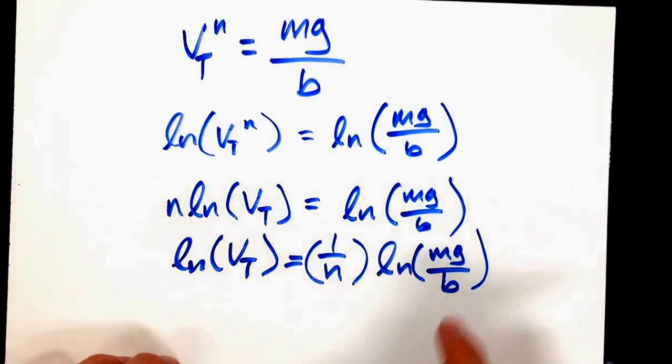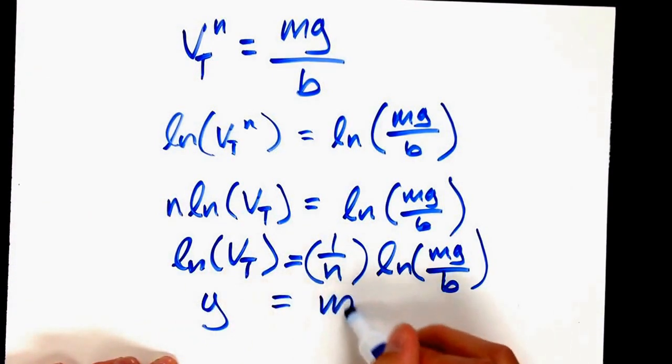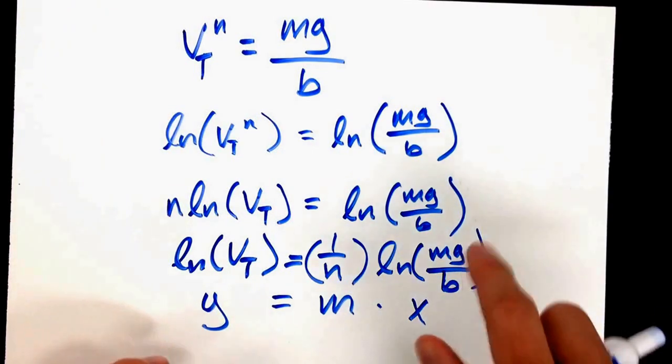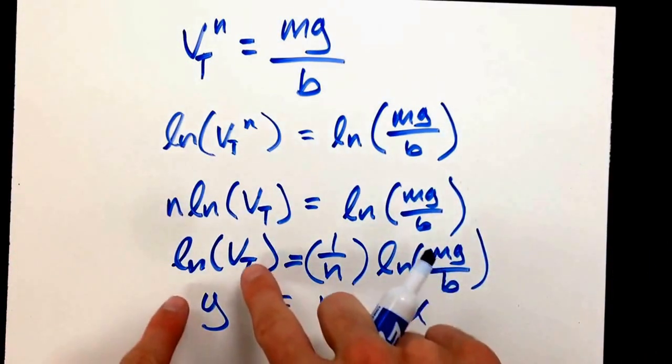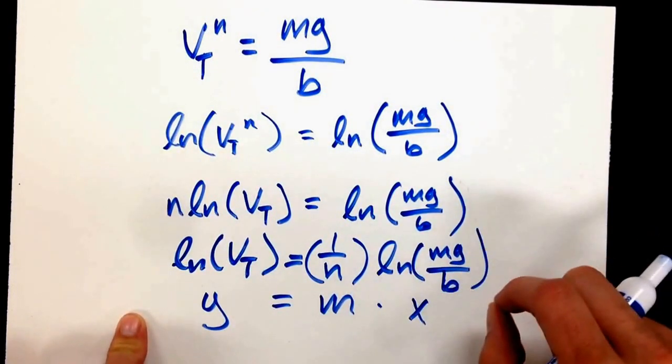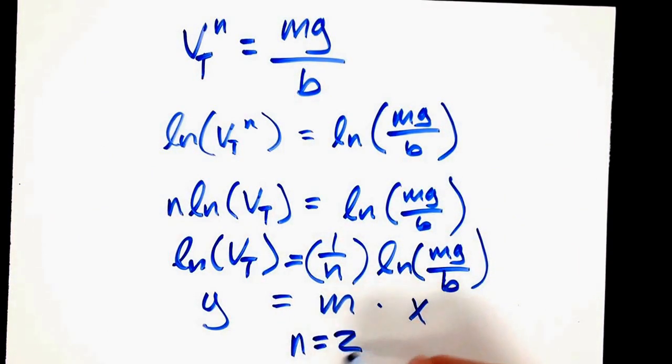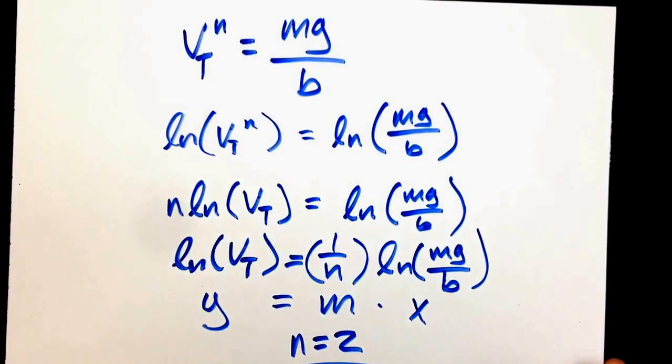Looking at that, this is y equals mx. You could graph the natural log of your terminal velocity versus the natural log of your weight, and you would get a graph with the slope equal to one over n. You should have gotten n to be equal to 2.